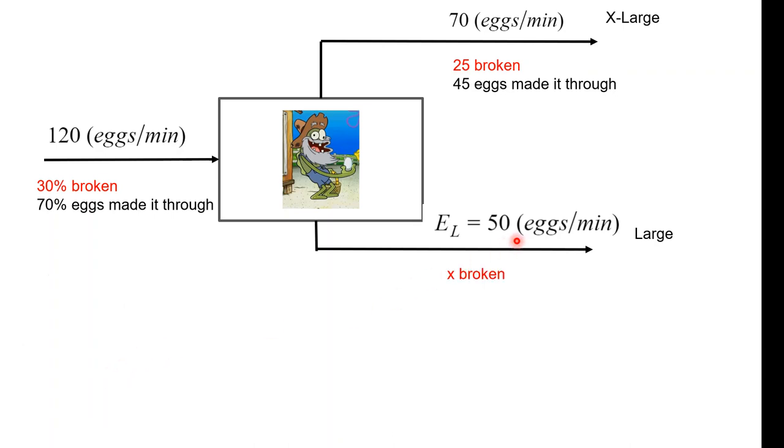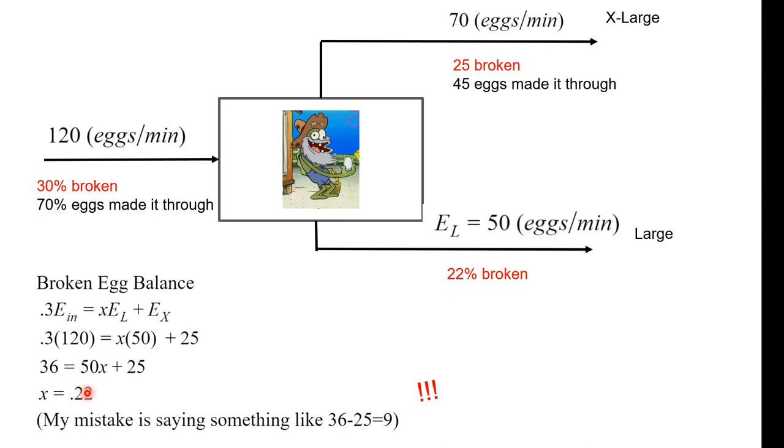What's next? Well, we can do—look, if we write a variable for the broken eggs, let's just call it x. Call the broken egg balance. What's broken here? 30% of 120 broken here, 25 and x. So we can write this: 30% of the x coming in, plus x times the 50 eggs per minute here, plus the 25 that are broken here. Look, you can plug it in and now it's algebra time. It's all for x eggs. There's gonna be 22% of broken eggs in this large stream.